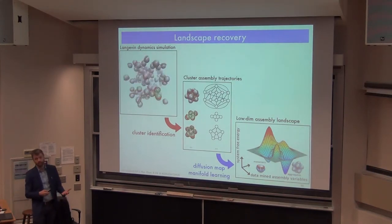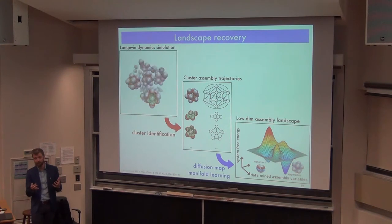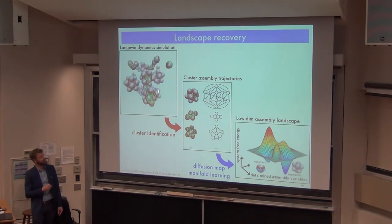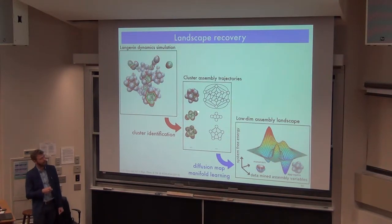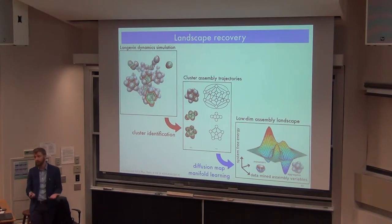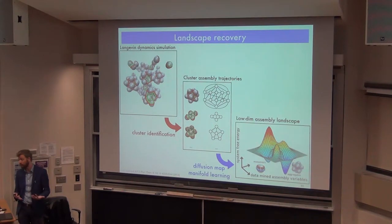We run molecular or Brownian dynamics simulations and watch the systems assemble — in this case, into icosahedra. We then measure distances between different self-assembled aggregates by mapping them as interaction graphs, where each node is a building block and each edge is an interaction. We can then measure distances between self-assembled clusters through graph matching — how much rewiring is needed to change one cluster into another. This distance measure is fed into the diffusion map, which gives us our low-dimensional variables for building our free energy landscapes.